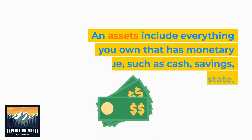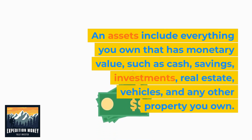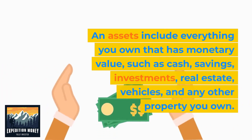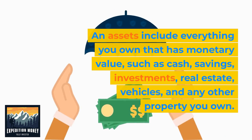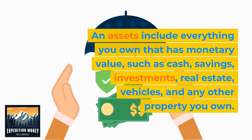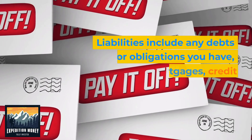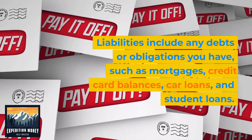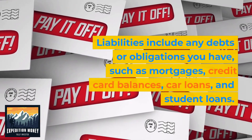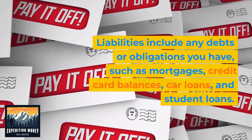Assets include everything you own that has monetary value, such as cash, savings, investments, real estate, vehicles, and any other property you own. Liabilities include any debts or obligations you have, such as mortgages, credit card balances, car loans, and student loans.